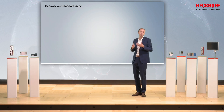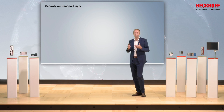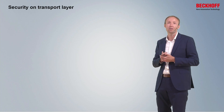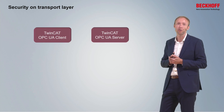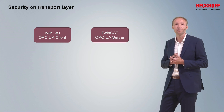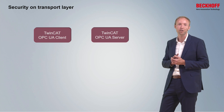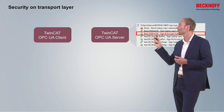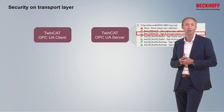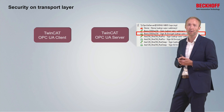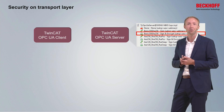OPC UA integrates multiple state-of-the-art security mechanisms. Whenever an OPC UA client wants to connect to a server, it chooses a server endpoint specifying which security mechanisms to use. In this example, the TwinCAT OPC UA client selected the Basic 256 SHA-256 endpoint and wants to use message signing and encryption. For this to work, client and server have to trust each other — they must build a so-called trust relationship.